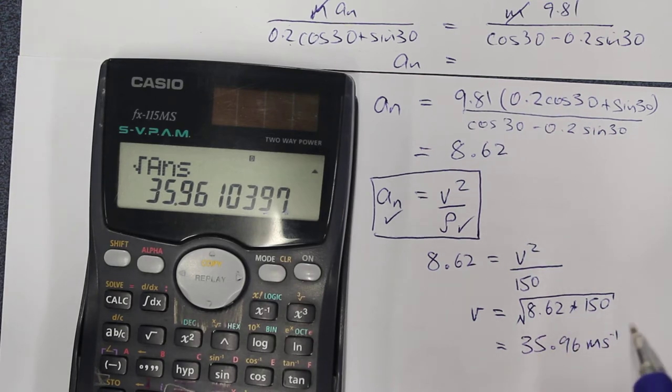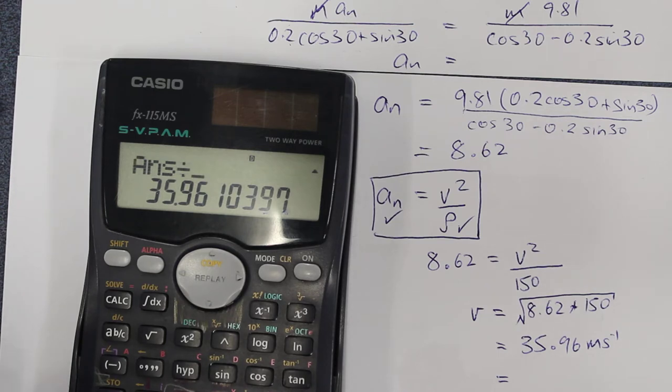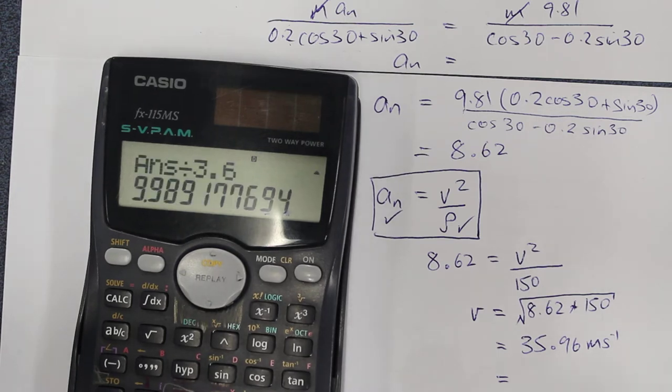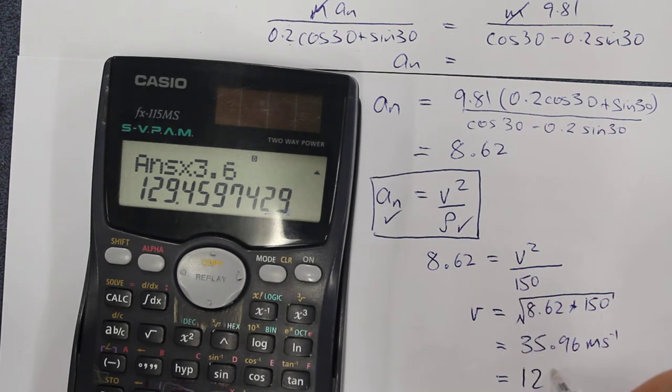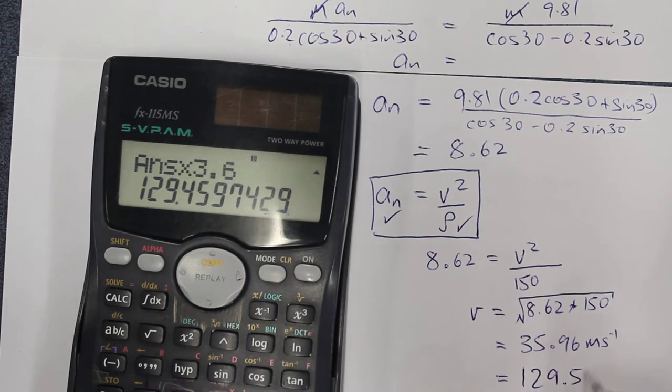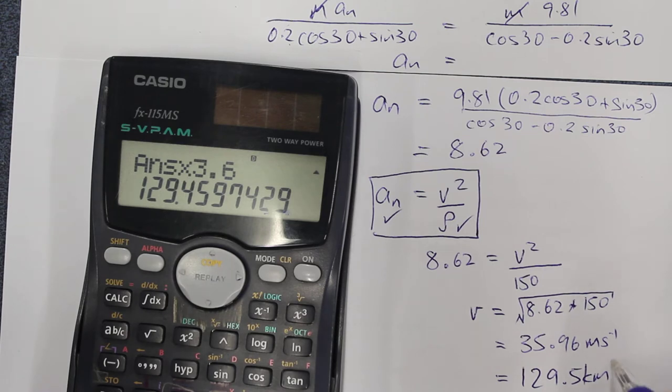That's meters per second. If we wanted this to be written in kilometers per hour, we could just multiply that number by 3.6, so that's about 129.5 kilometers per hour.